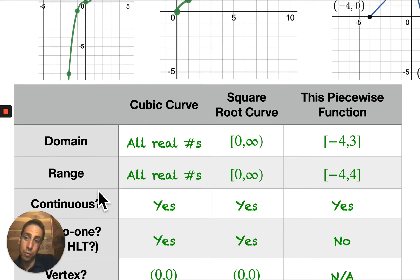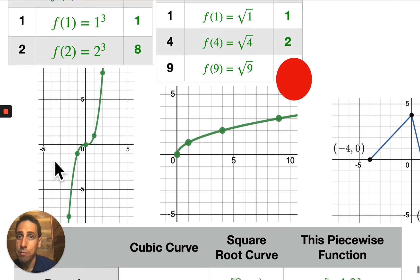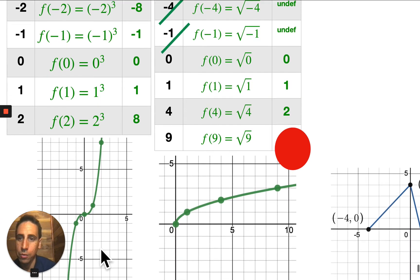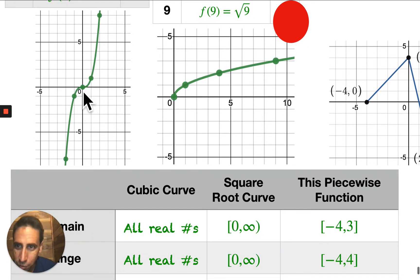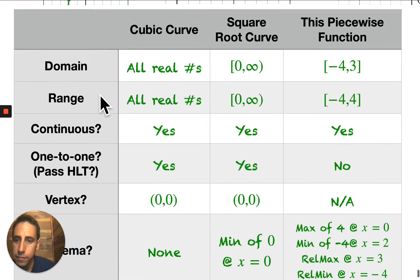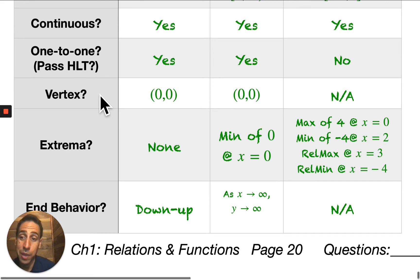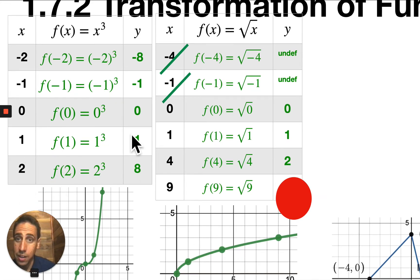Is it continuous? Yes — one fell swoop of your pencil, you can draw the entire thing without having to jump or break. Is it one-to-one? Does it pass the horizontal line test? The answer is yes, because there are no repeats in the outputs. Every output — like the output of 8 — has exactly one input. A horizontal line at a height of 8 will only cross the graph once, and that's true for every horizontal line. Are there any extrema? No extrema — no relative minimums or relative maximums. What kind of end behavior does it have? Down-up end behavior: as x goes to negative infinity, y goes to negative infinity as well; as x goes to positive infinity, y goes to positive infinity.